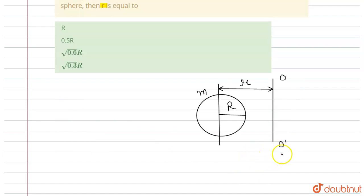And we know that m R square is equal to moment of inertia of sphere about O O dash.